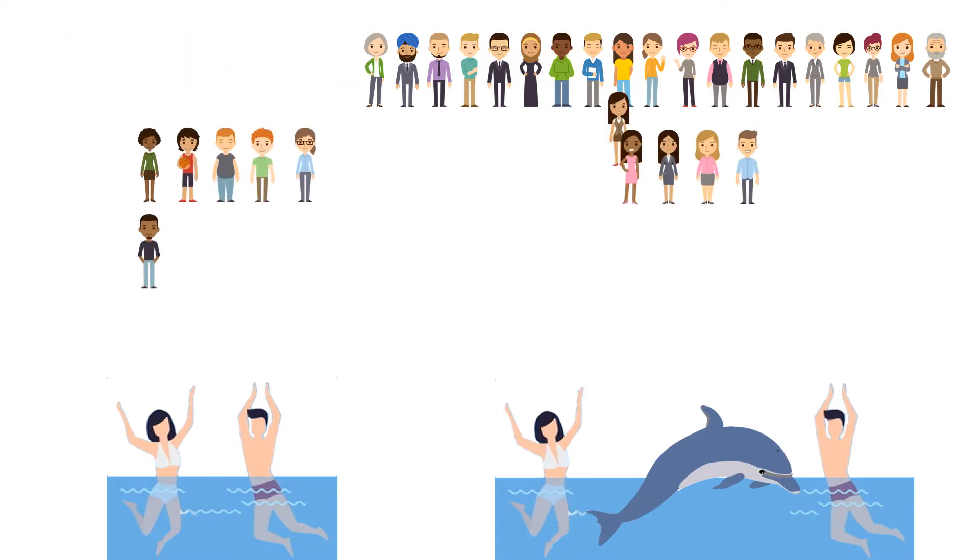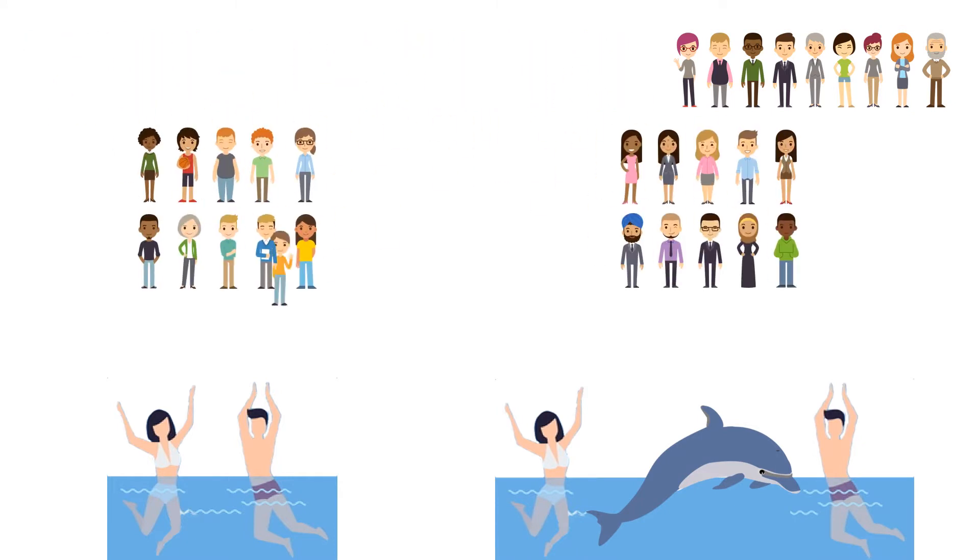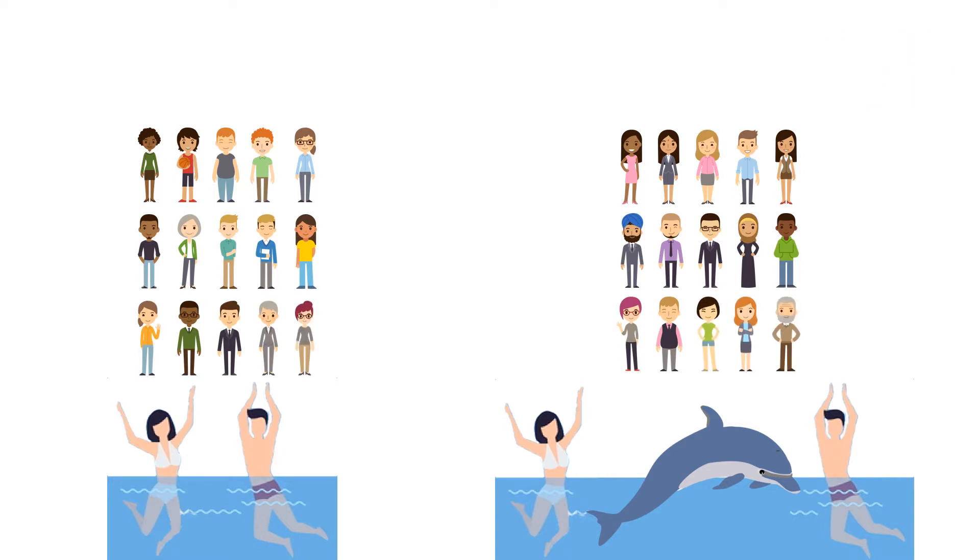The participants were randomly assigned to one of the two groups. After the treatment, three of the participants in the swimming-only group showed signs of improvement, and 10 of the participants in the dolphin group showed signs of improvement.